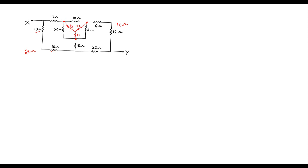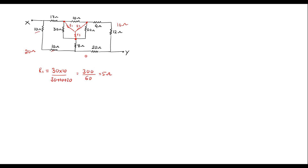Let me tell you how to find the value of R1, R2, and R3. R1 will be equal to: the adjacent resistors for R1 are 30 and 10, so we multiply 30 into 10 divided by 30 plus 10 plus 20. That is 300 divided by 60, which gives R1 equal to 5 ohm.